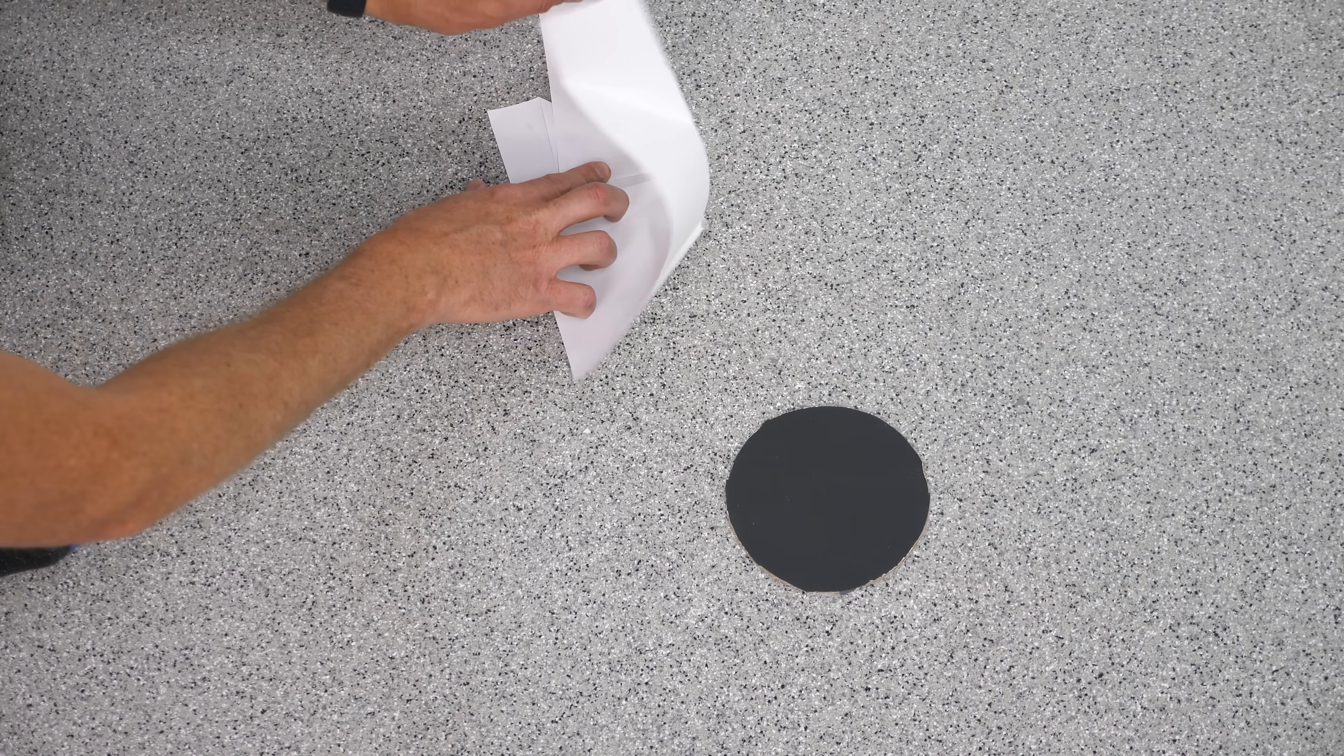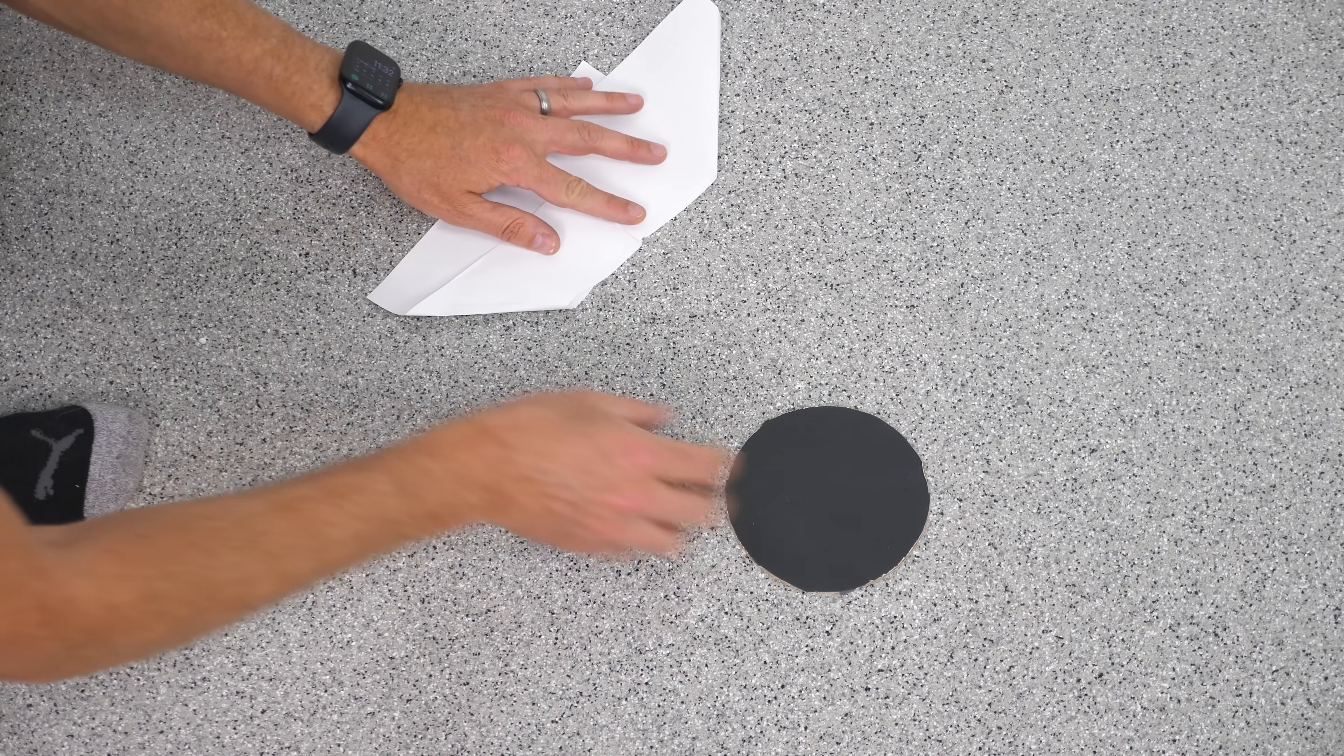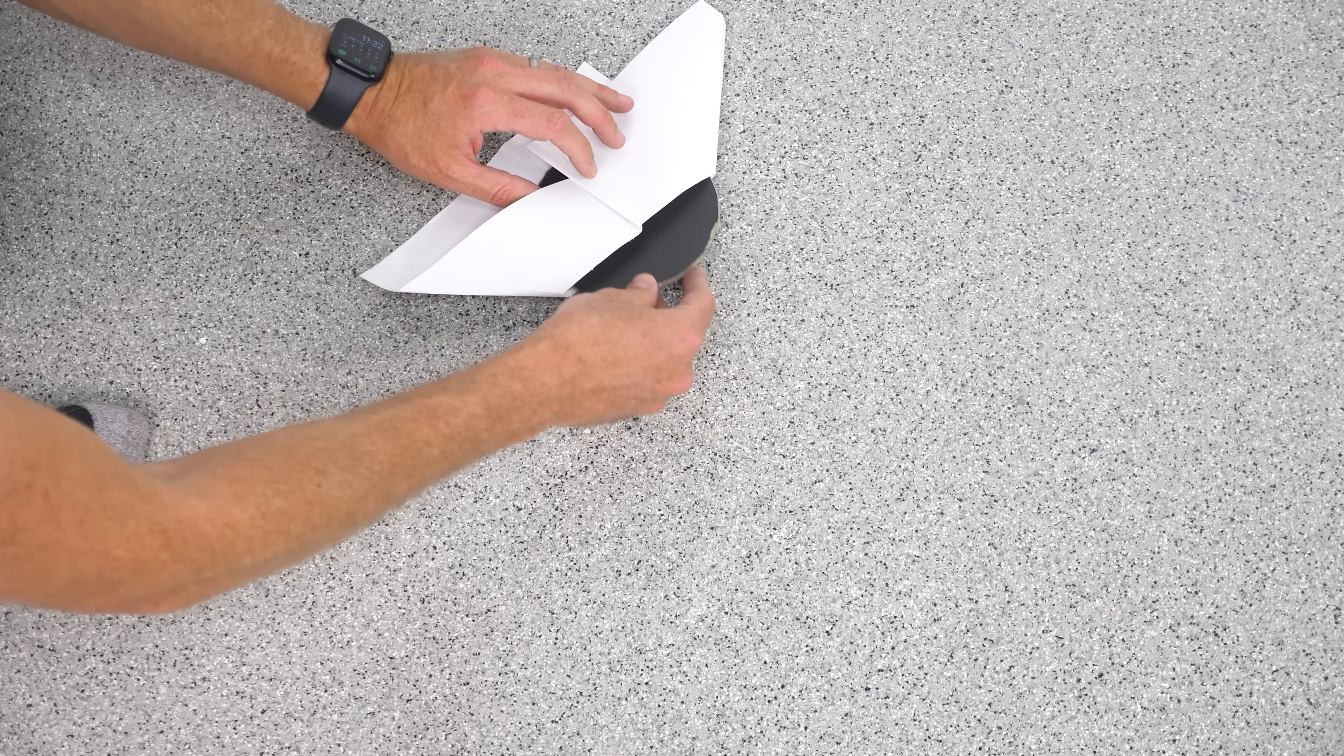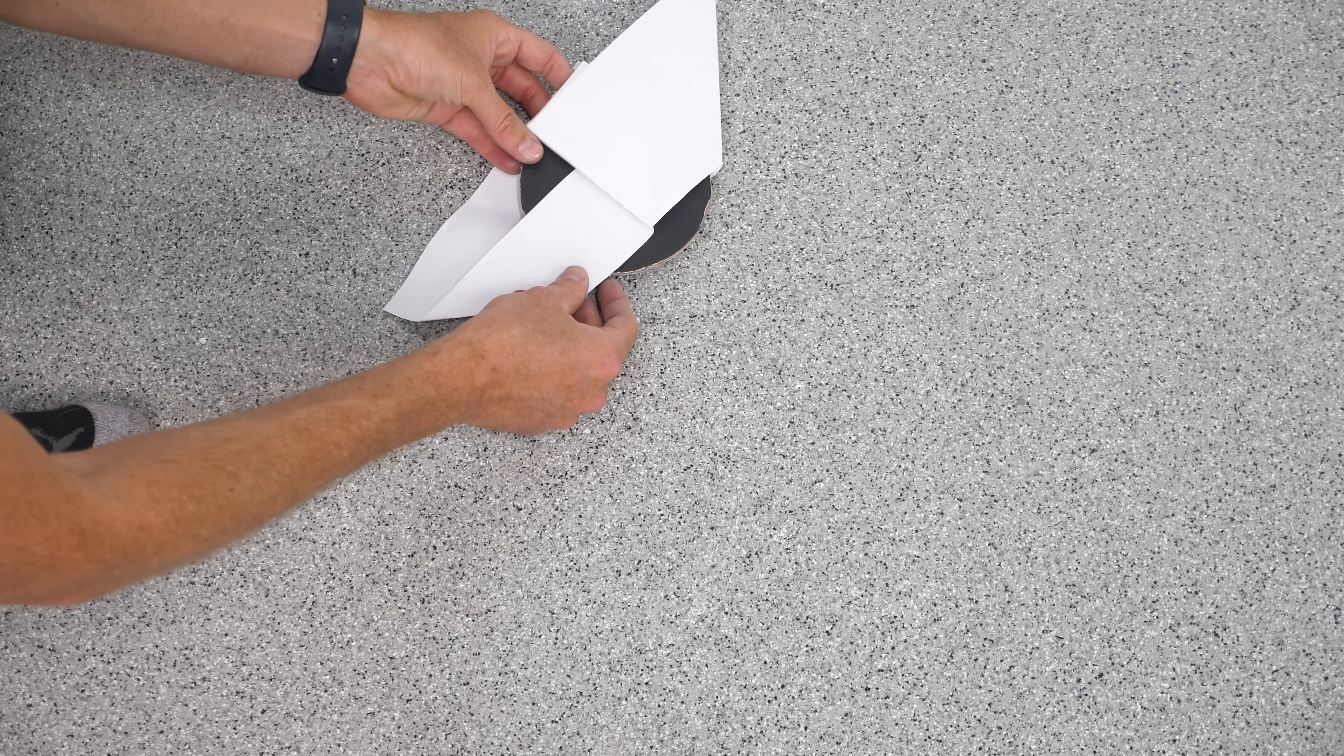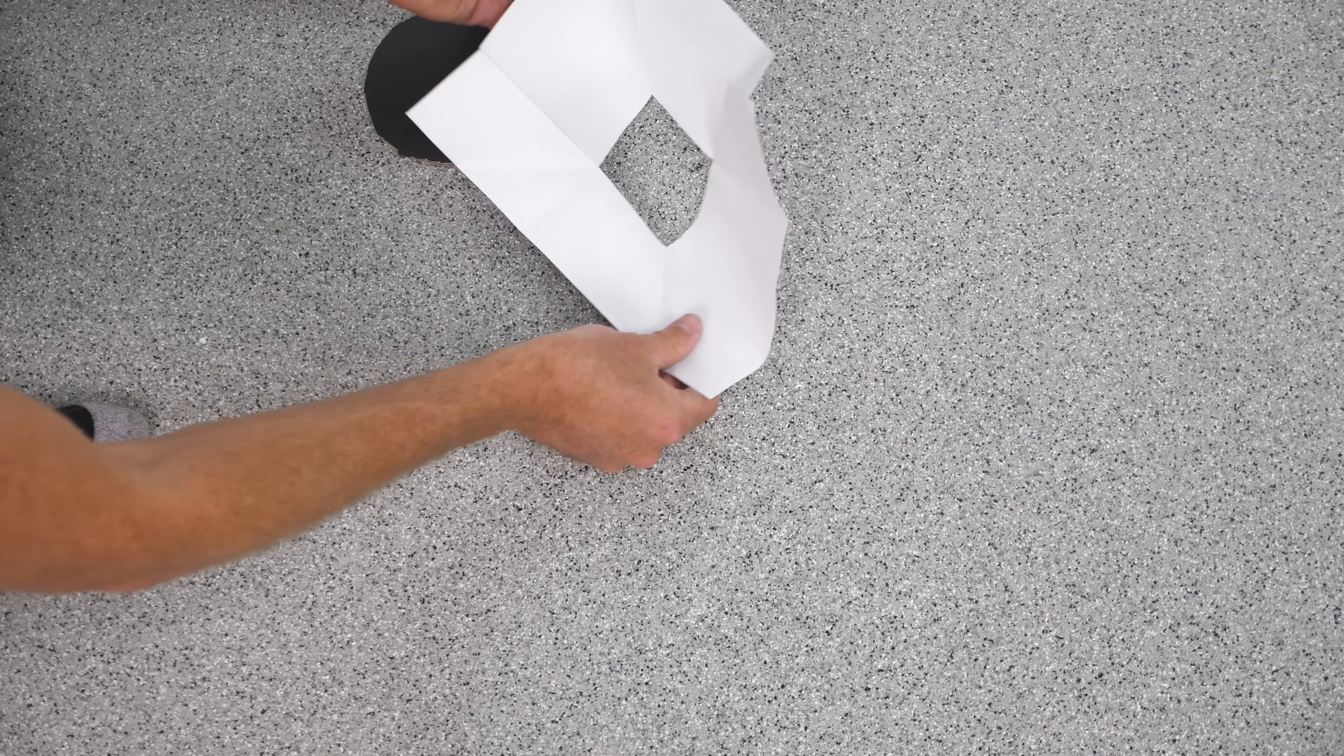So when we fold the paper, we're essentially taking those two squares of paper out and sending them into a different plane that won't interfere with the disc. So we're essentially removing the material without actually removing it because we're just sending them into a higher spatial dimension.